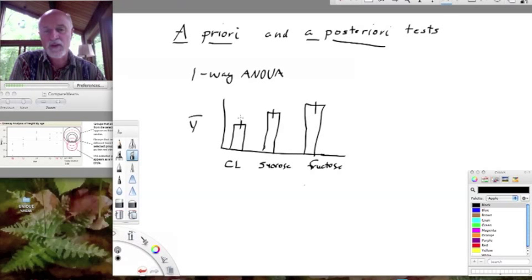Well, that's somewhat satisfying, but it doesn't actually tell us which means differ from what other means. And even with three groups, one could make many comparisons. One could compare control versus sucrose, sucrose versus fructose, and control versus fructose. One could imagine if one had four groups, then you could actually make even more comparisons, right?